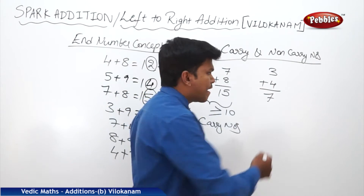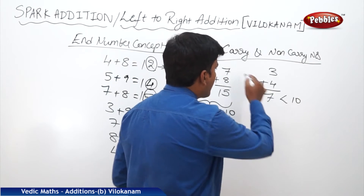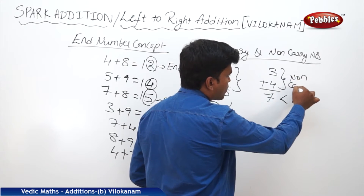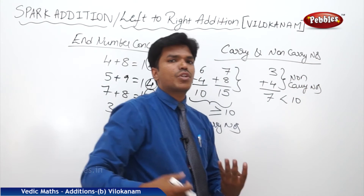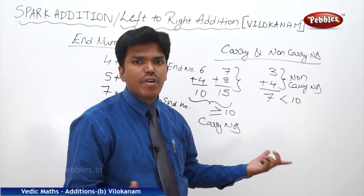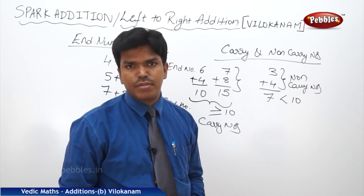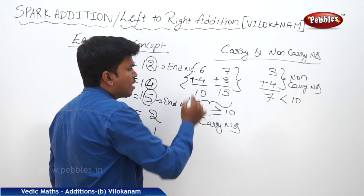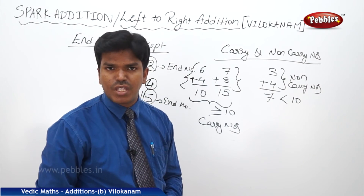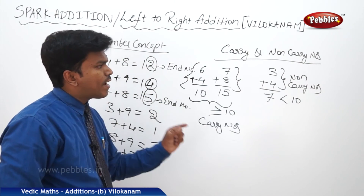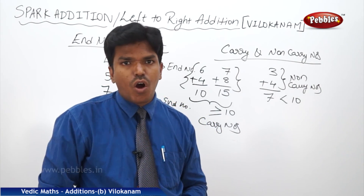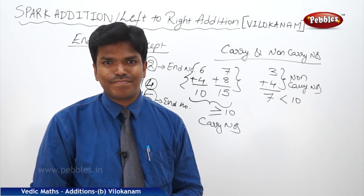If the sum is less than 10, those numbers are known as non-carry numbers — they don't generate a carry. For example, 3 plus 4 is 7, which is less than 10, so it's a non-carry number. Now let us apply these concepts and go deeper into the method to see how they help us.